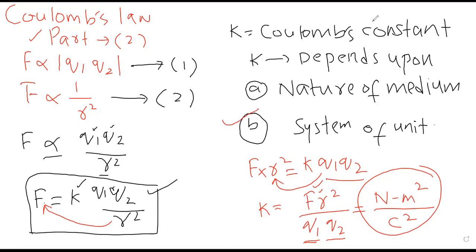Now I'll explain how k depends on the system of units. If I put dyne instead of newton — we know that 1 newton = 10⁵ dynes, so replacing newton with 10⁵ dyne obviously changes the number। Similarly, if centimeter² is used instead of meter², the value changes again। It means k की value system of units पर depend करती है।